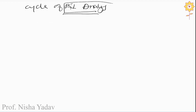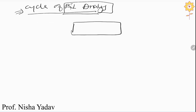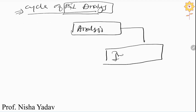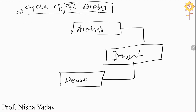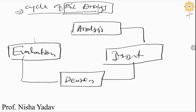In BI analysis, we had seen what BI is and what are the main components of BI analysis. There are four main components in the cycle of BI analysis. This cycle starts from the first phase, which is known as the analysis phase, then the insight phase, then decision, and the fourth is evaluation. The arrows represented on screen show that it moves in a circular manner, which is why the term 'cycle' has been given.